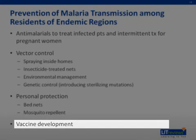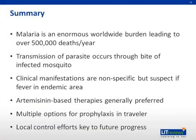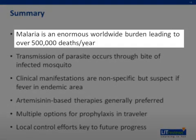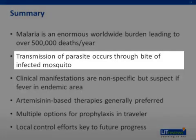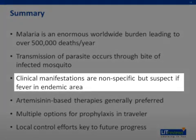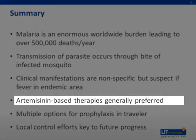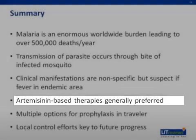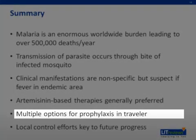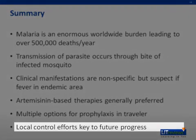To summarize, malaria is an enormous worldwide burden and leads to over half a million deaths per year. Transmission occurs through the bite of an Anopheles mosquito carrying the parasite. Clinical manifestations are variable, but malaria should be suspected in any individual with a fever who has recently been in a malaria-endemic region. Artemisinin-based therapies are generally preferred for treatment, especially for Plasmodium falciparum. Multiple options are available for prophylaxis in travelers and should be targeted to local resistance patterns. Local control efforts and vaccine development are key to future progress in decreasing the burden of this disease. Thank you.